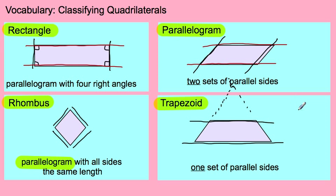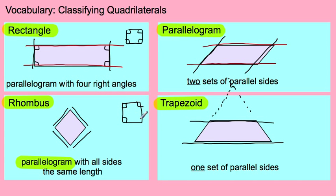And then the last one is a square. A square is a rectangle because it forms four right angles. It's also a rhombus because all sides are the same length. It's also a parallelogram because all the opposite sides are parallel. So some shapes fit into a whole bunch of categories — and that's going to be the fun of it.